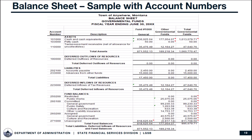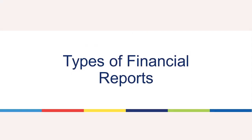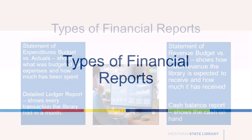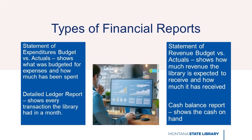We'll look at a library's revenue and expenditure reports in detail. There are actually four types of financial reports you may review over the course of a year. Budget vs. Actuals for expenditures — this shows what was budgeted for expenses and how much has been spent.